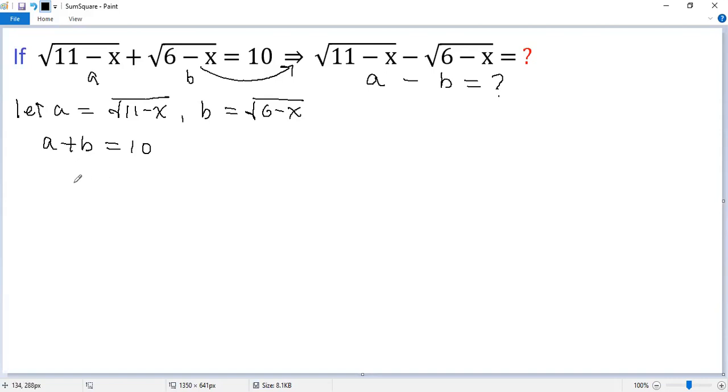So a minus b times a plus b. We know it is a squared minus b squared. A equals square root of 11 minus x, so a squared just equals 11 minus x. B squared equals 6 minus x.